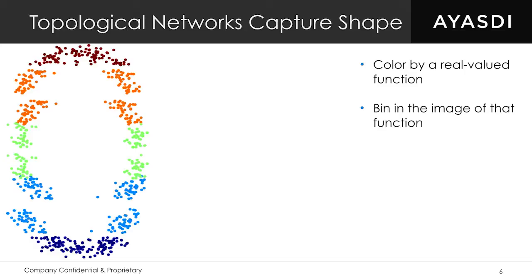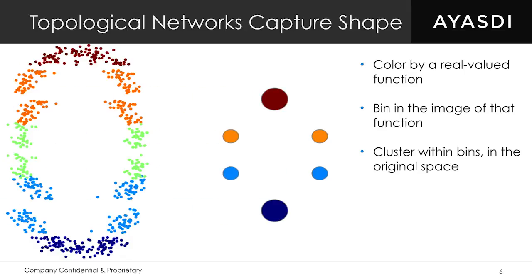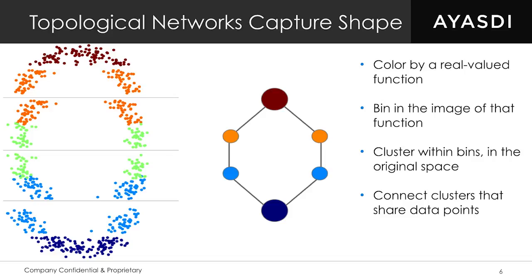The top bin and the second-to-top bin overlap, and that overlaps with the second-to-bottom bin, and that overlaps with the bottom bin. So you take your function — height — and bin in the image of that function. Within each bin, you run your favorite clustering algorithm; it doesn't really matter which one. In the top bin, those red and orange points form an arc, so there's really just one cluster there. You've got these overlapping bins, and inside each one you cluster the data. Because the bins had overlap, some data points ended up in more than one cluster. The orange data points split apart — they ended up in the top bin and one adjacent bin, and the orange points on the other side ended up in the top bin and the one on the right.